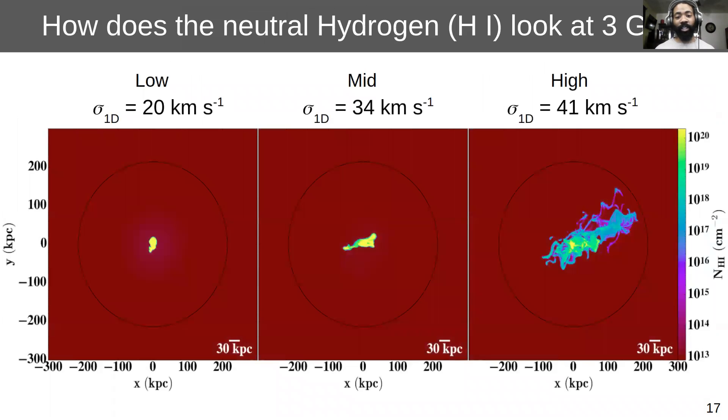And so we looked at three different cases of turbulence, and we found that in this high case with an average turbulence around 41 kilometers per second sets up a convective flow that allows us to have these large filaments of H1 as well as other lower ions that exist that agrees with observations of nearby star forming galaxies.